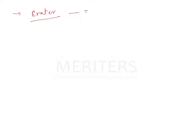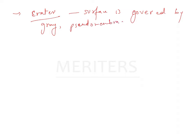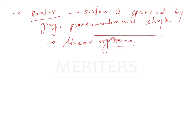The surface of the gingival crater is covered by a gray pseudomembranous slough. This is demarcated from the remainder of the gingival mucosa by a pronounced linear erythema. These are the important clinical features of ANUG — a microbial disease of the gingiva most often occurring in an impaired host.